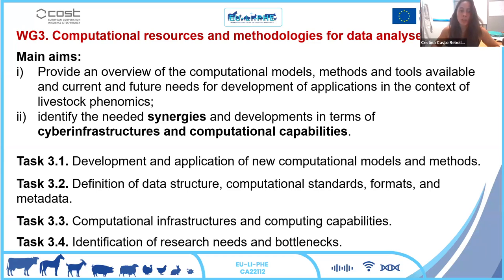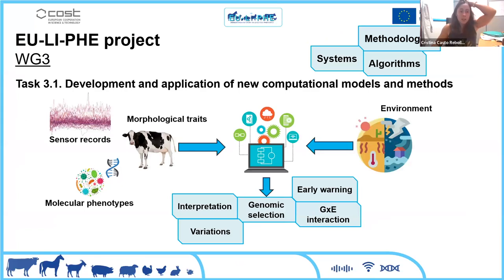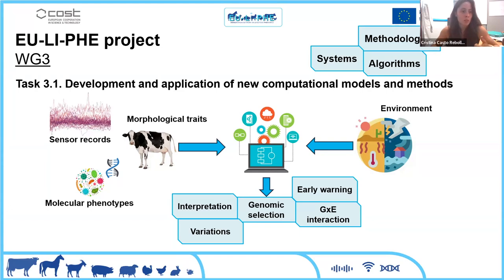We will try to achieve these aims by developing different tasks. The first task, which we are working on right now, involves exploring the application of new methods, algorithms, and computational strategies to improve data structure and interpretation of phenomics, considering different approaches and technologies like sensors, molecular phenotypes, and morphological traits of the global phenome.